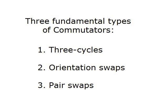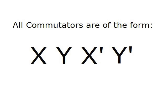All types of commutators are always of the form [x, y] = x, y, x', y'. Where x is some algorithm, y is some algorithm, and x' and y' are the inverses of x and y, respectively.